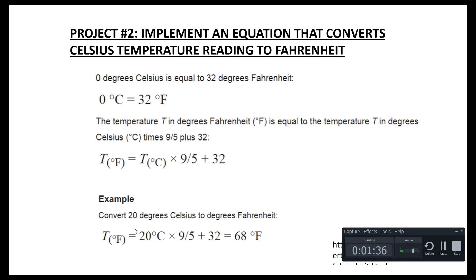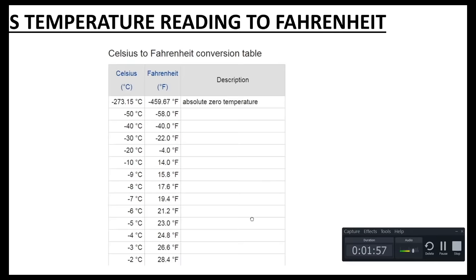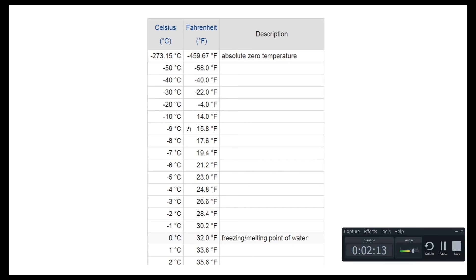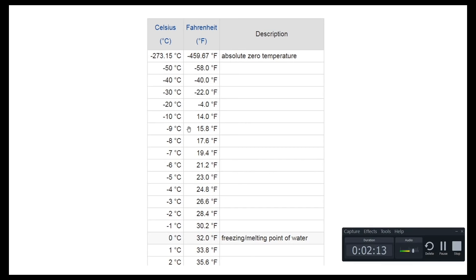For example, to convert 20°C to Fahrenheit: multiply 20 by 9, divide by 5, and add 32 — the result is 68°F. Looking at a conversion table: 0°C (the freezing point of water) is 32°F. At 6°C it becomes 42°F, and at -50°C it becomes -58°F. Let's implement this mathematical equation in Simulink.